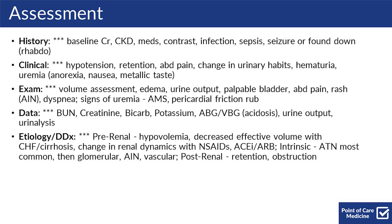For their exam, do a volume assessment, look for edema, trend their urine output, check for a palpable bladder, see if there's abdominal pain, or any rashes to suggest AIN, see if they have dyspnea, and any signs of uremia including altered mental status or a pericardial friction rub.